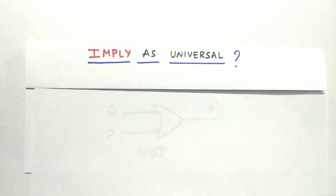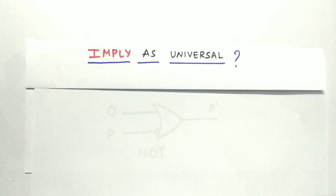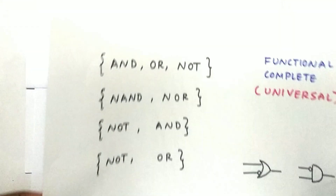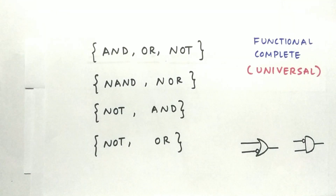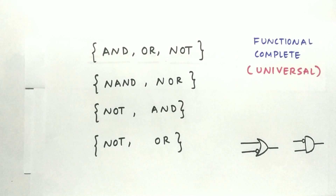Now, coming to the implied gate — whether it's universal or not. As you can see, in the implied gate we have two gates: NOT gate and OR gate. So the implied gate is NOT and OR. By using NOT and OR, are we able to get all boolean operations? Let's check it.